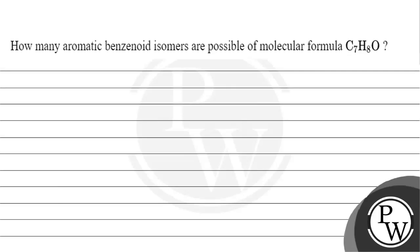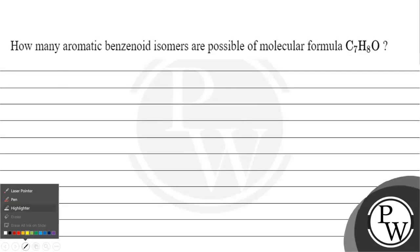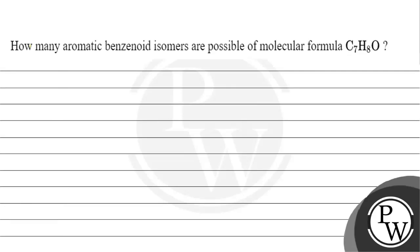Hello, children. Let's read this question. The question says: how many aromatic benzenoid isomers are possible of molecular formula C7H8O? We will ask how many aromatic benzenoid isomers are possible of molecular formula C7H8O.